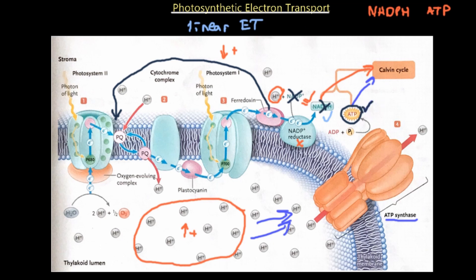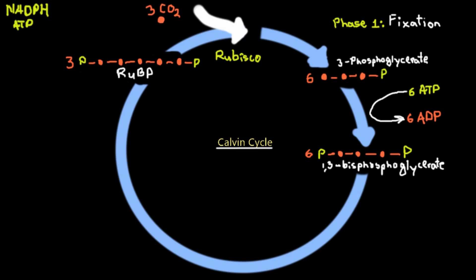Now that we've produced NADPH and ATP from the electron transport, we can go through the Calvin cycle, which occurs in the stroma of the chloroplast. There are three phases. The first is the fixation phase: we fixate carbon from CO2 onto an organic molecule such as 3-phosphoglycerate. Three CO2 molecules come in through the stomata and combine with three 5-carbon RuBP molecules, undergoing a carboxylation reaction to produce six molecules of 3-phosphoglycerate.